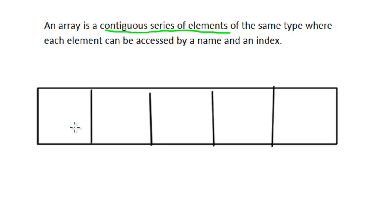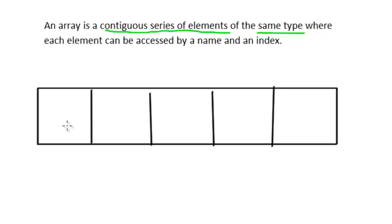The next part of the definition is that all elements must be of the same type. A fancy word for this is 'homogeneous,' so you may hear arrays called a homogeneous structure. Whatever we place in these elements must be the same type — a character array, a string array, a double array — it doesn't matter which, but we cannot have a mixture of data types such as a string in the first element and a double in the second.